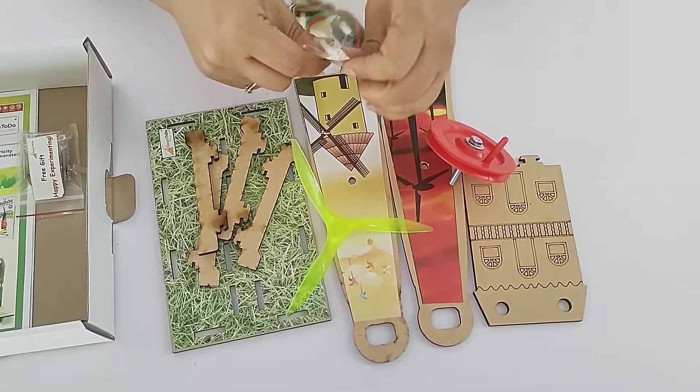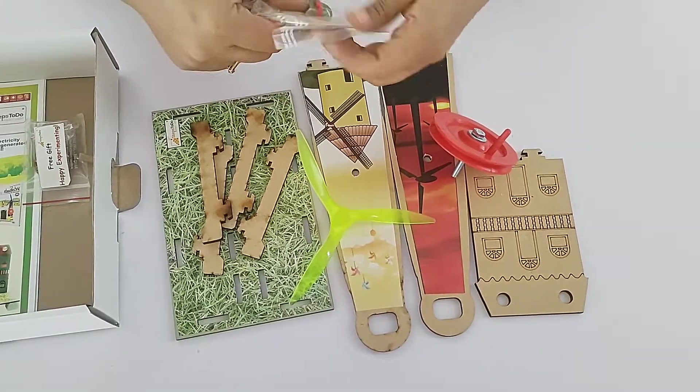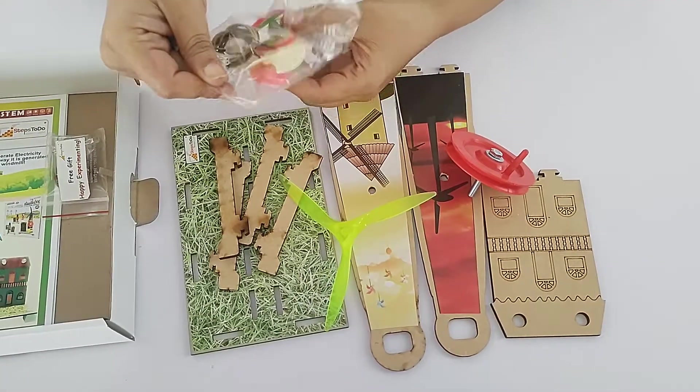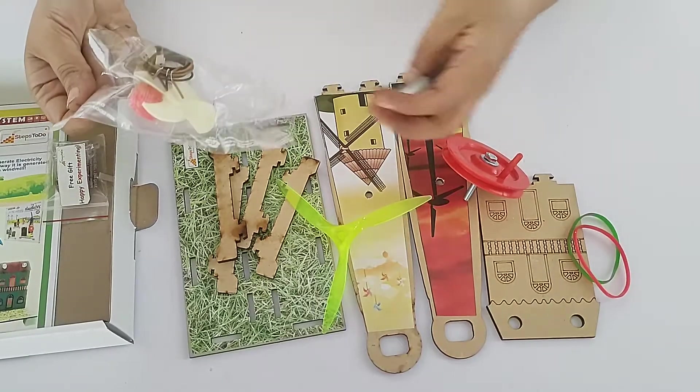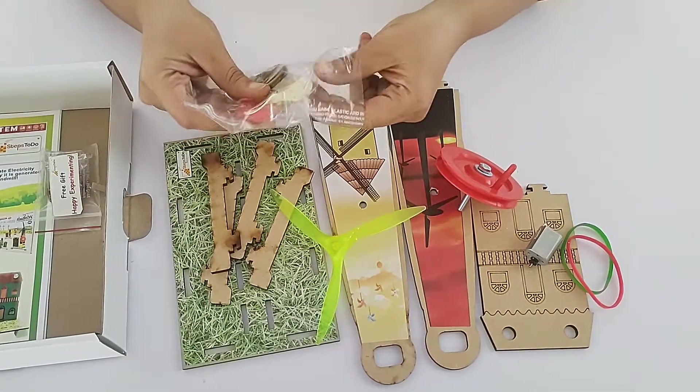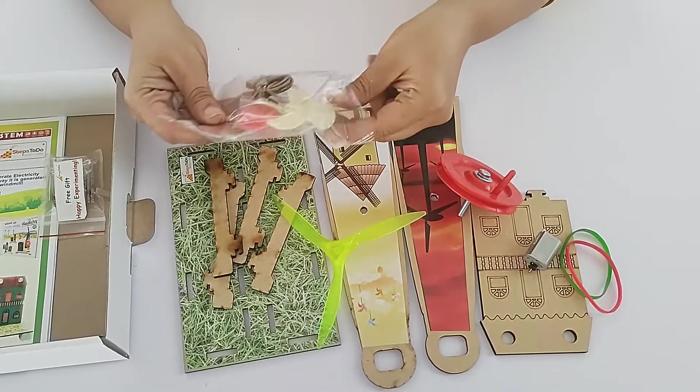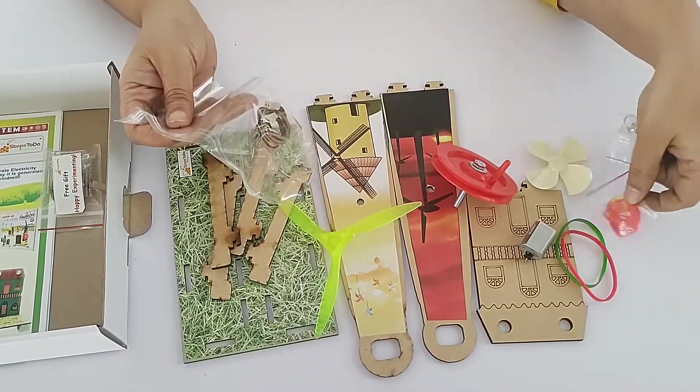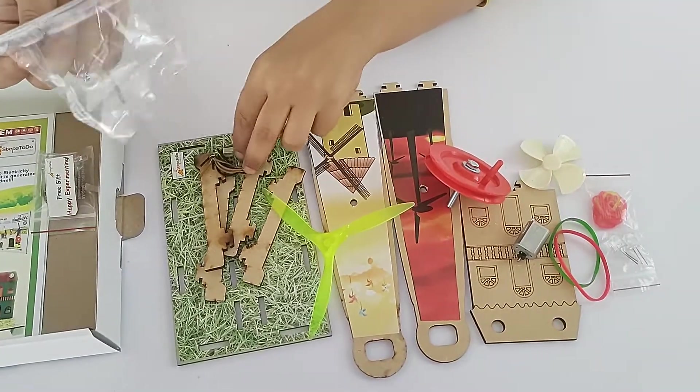Then in this pouch we will get two rubber bands, one dynamo motor, four blade fan, small rubber bands, and LEDs.